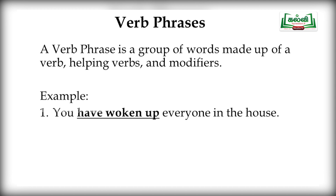Next: verb phrase. A verb phrase is a group of words made up of a verb, helping verbs, and modifiers. Example: 'You have opened up everyone in the house.' Here, 'have opened up' is a verb phrase. We have 'have' and 'opened' as two verbs, plus 'up' as a preposition, and all three come together as a verb phrase.